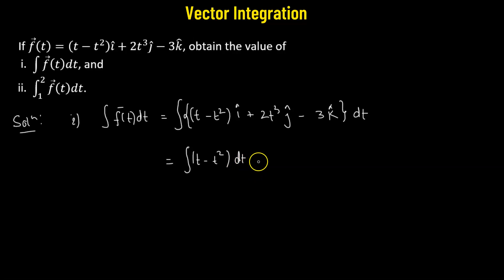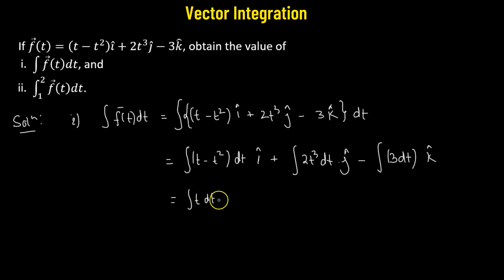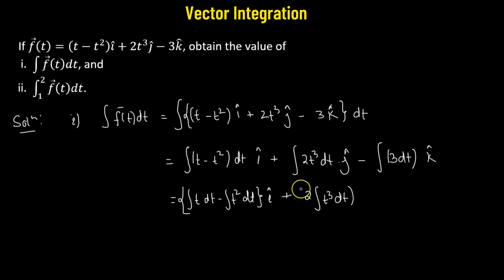We'll separate the integrals into component form. The x-component is the integral of (t minus t squared) dt, multiplied by i-cap. The y-component is the integral of 2t cubed dt, multiplied by j-cap. The z-component is the integral of 3 dt, multiplied by k-cap. Further simplifying, we have: integral of t dt minus integral of t squared dt for i-cap, plus 2 times integral of t cubed dt for j-cap, minus 3 dt for k-cap.